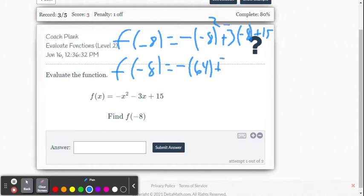f of negative 8 plus the negative 3 times negative 8. I guess I should have this in parentheses. And then plus the 15.